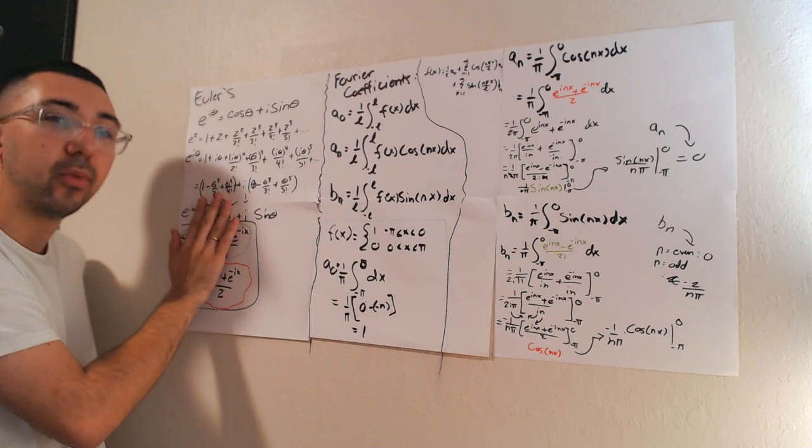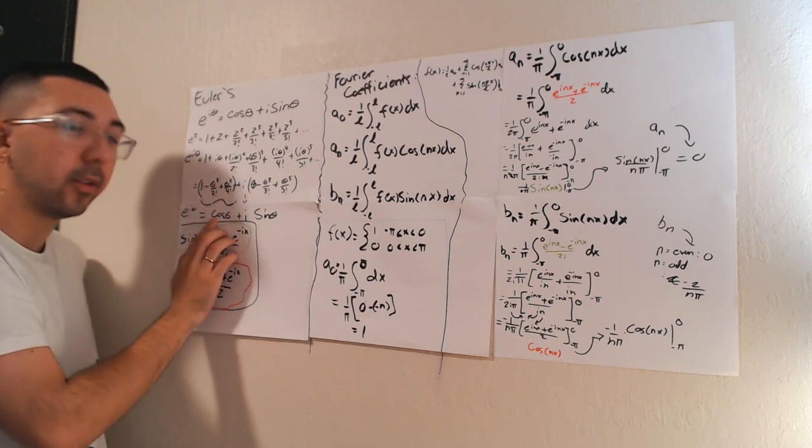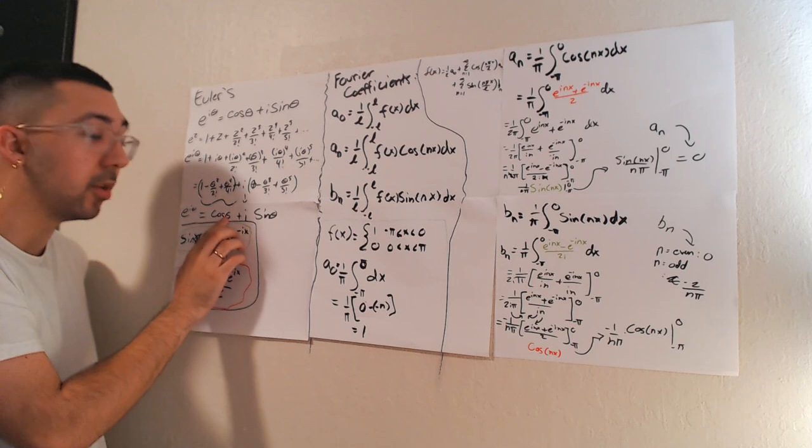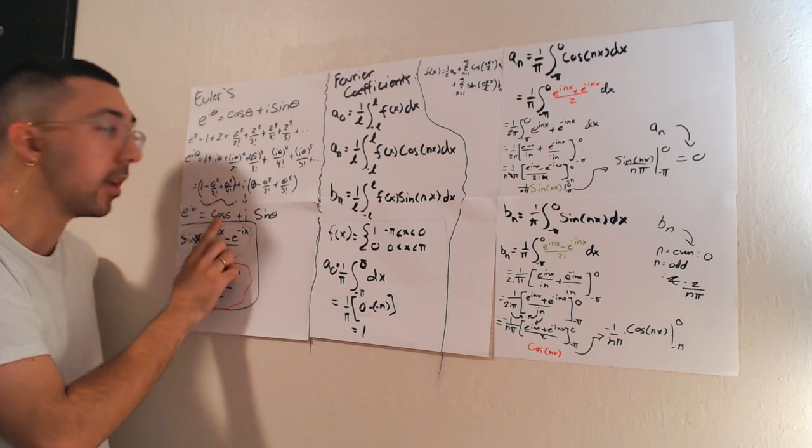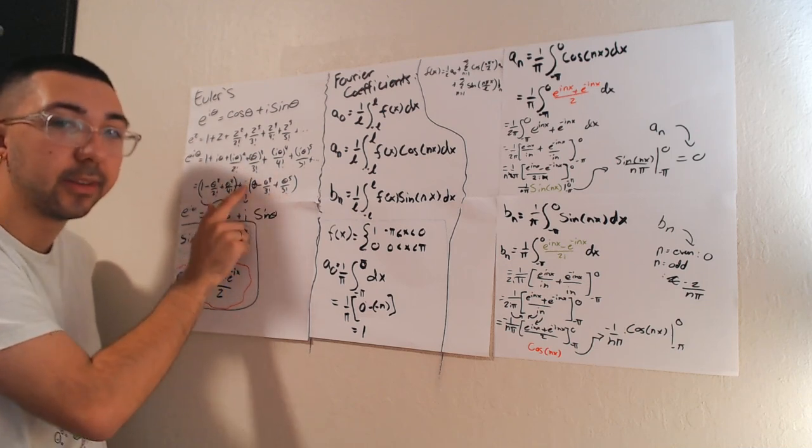All the terms without i, when you group them together, they look like the series expansion for cosine of theta, so we're going to turn that into cosine theta.